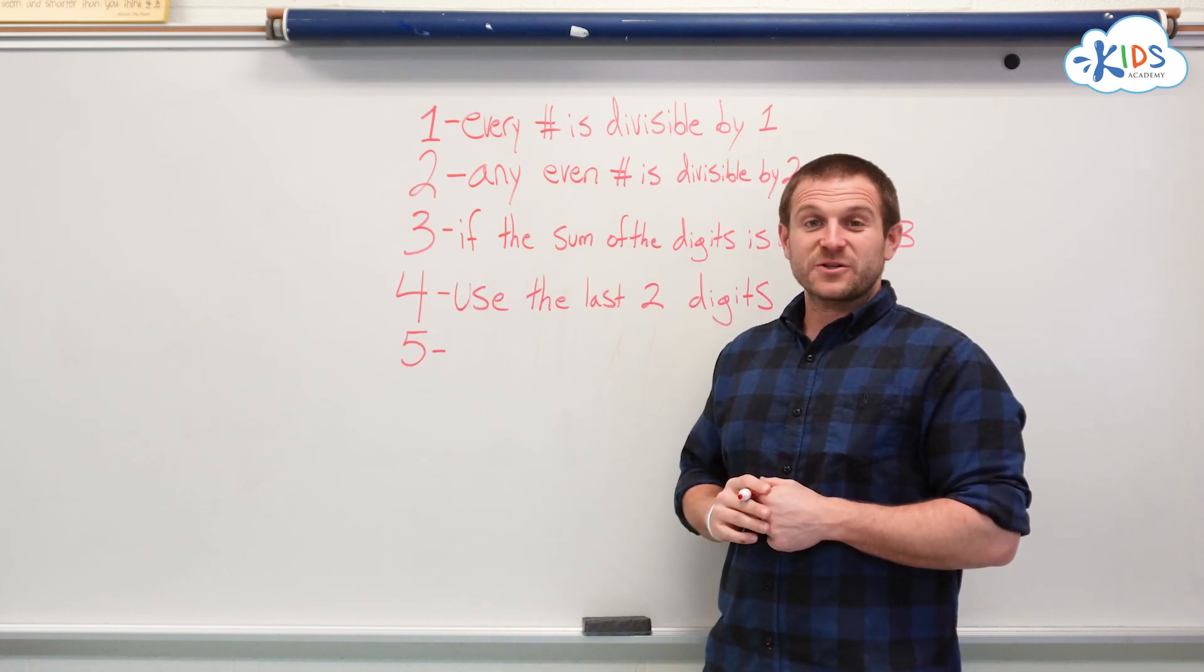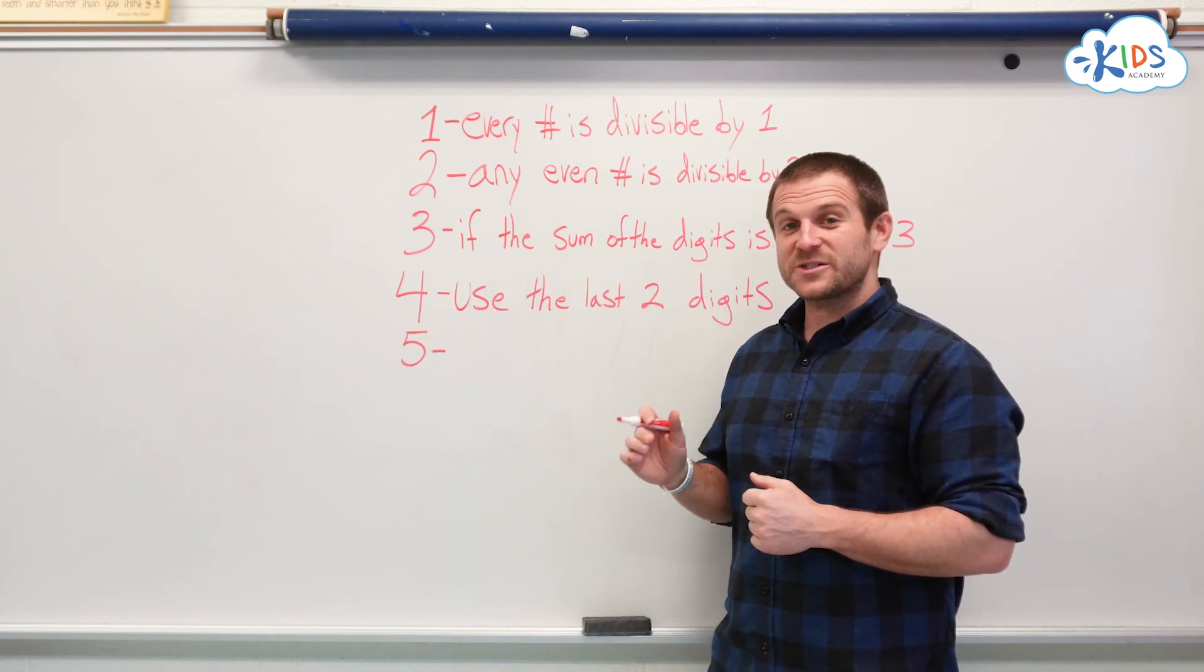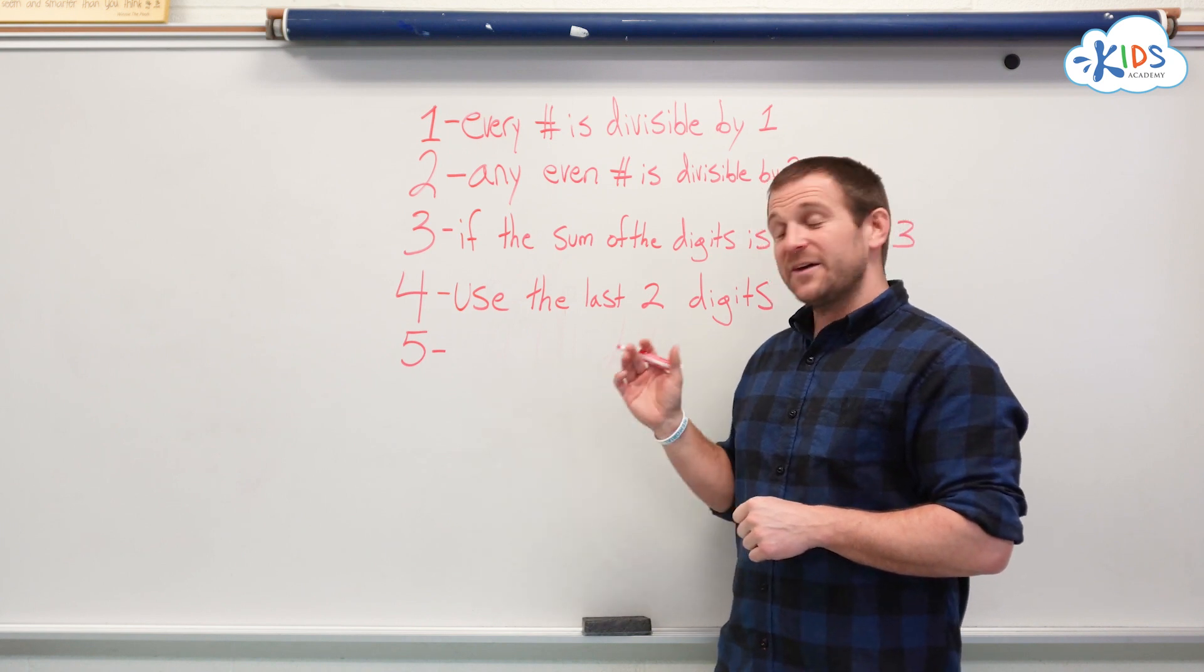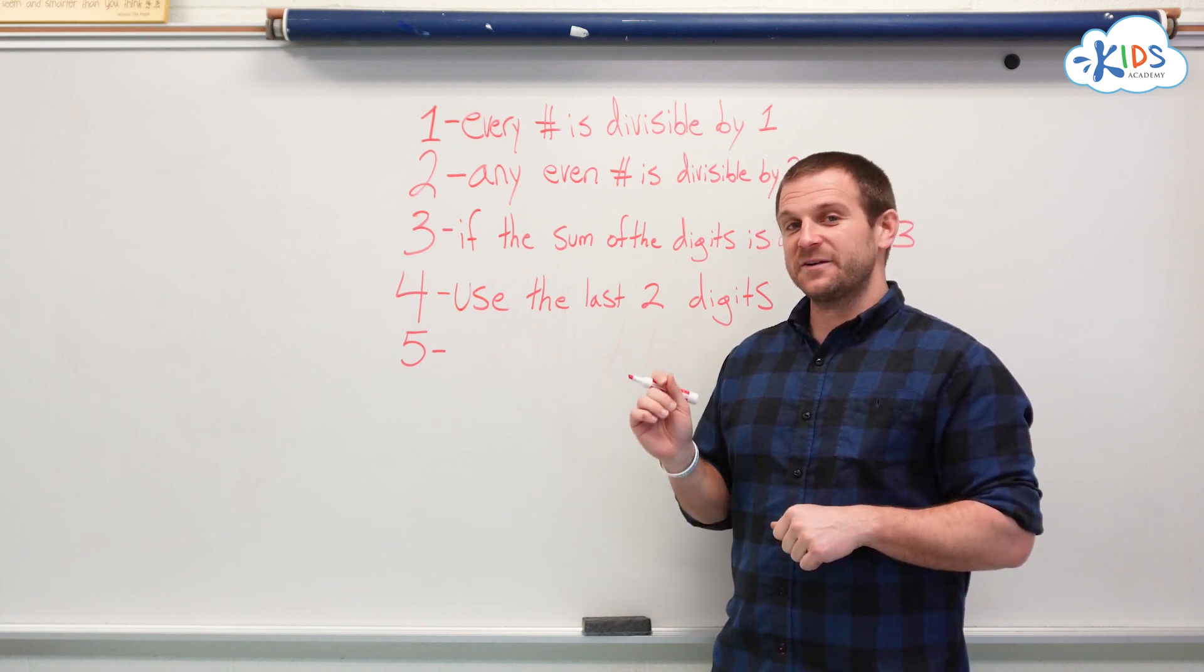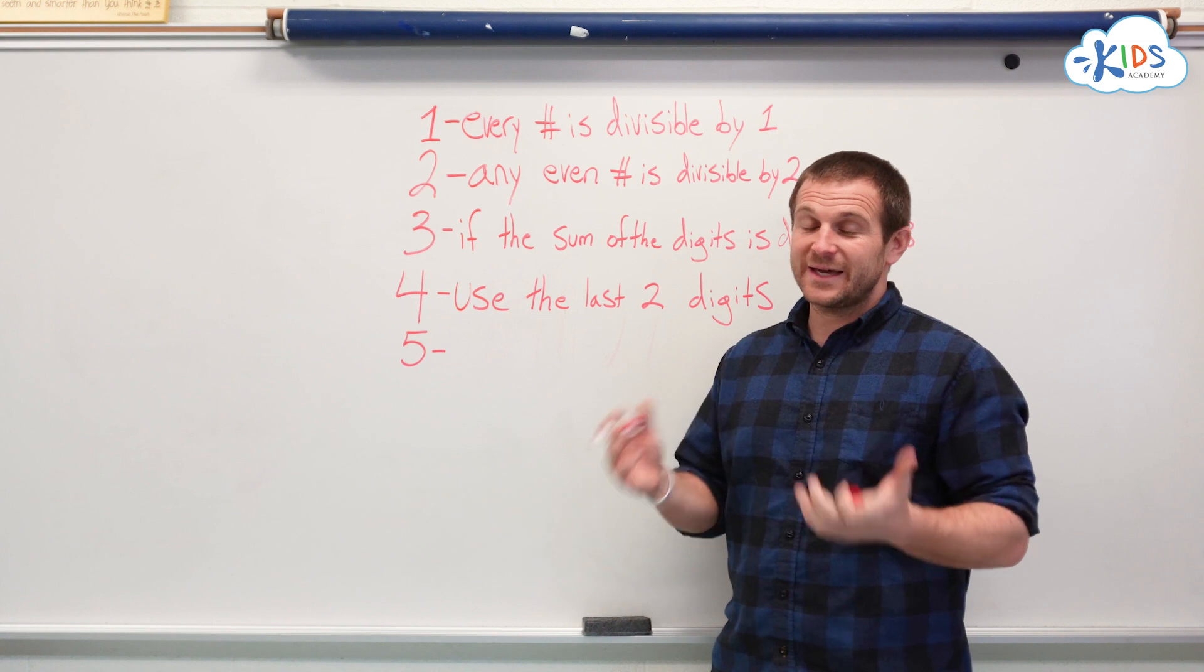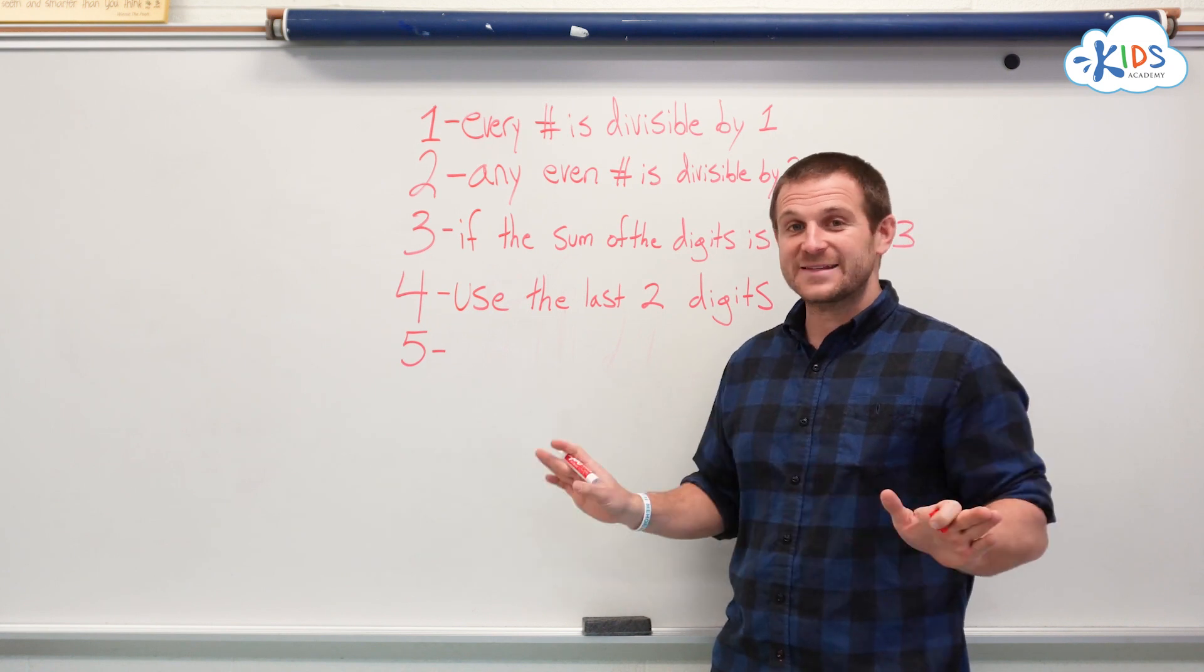5 is one of my favorite strategies. It's one of the simplest of this entire list. If the number you're looking at ends in a 5 or a 0, it's divisible by 5. That's it.